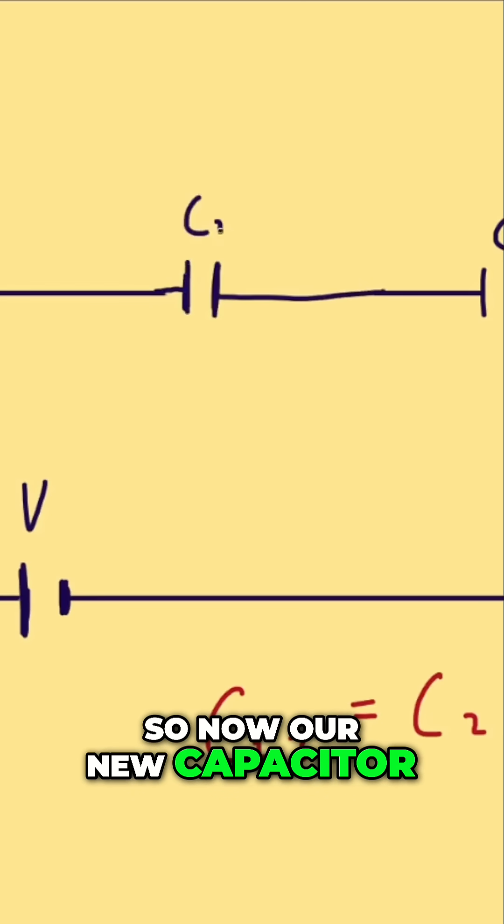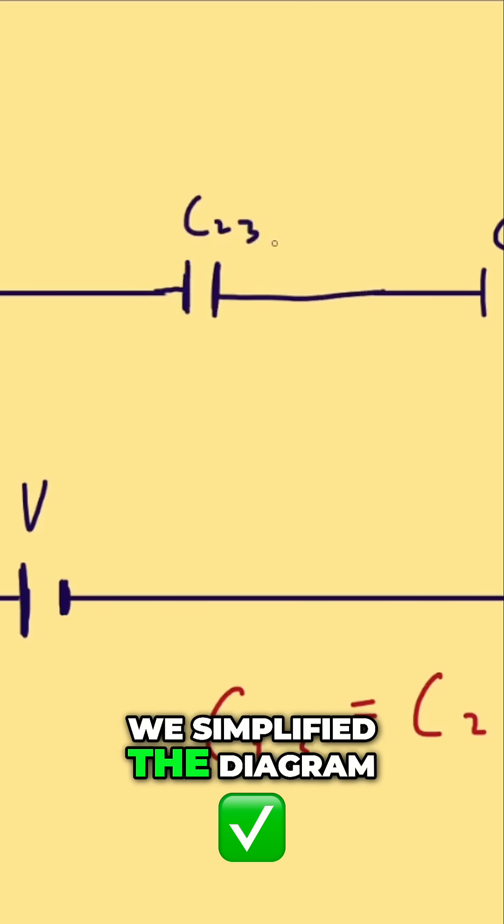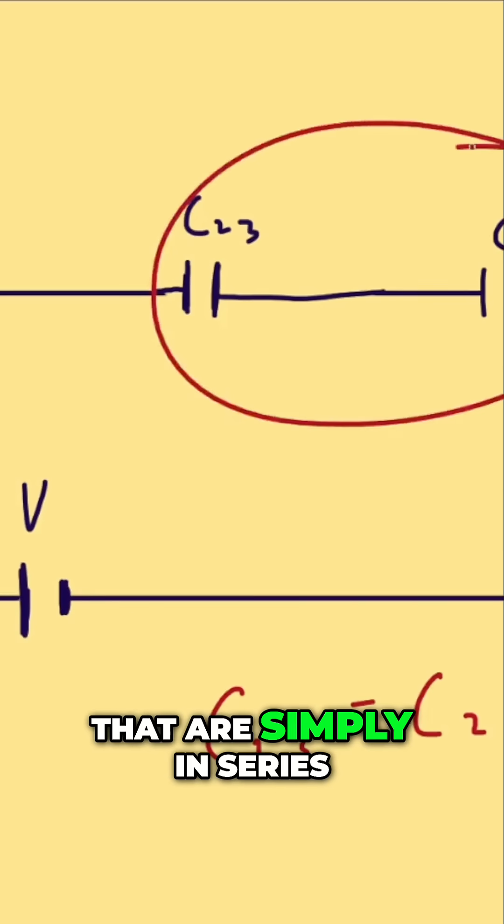So now a new capacitor, C23. Now we've simplified the diagram, and we can treat it like two capacitors that are simply in series.